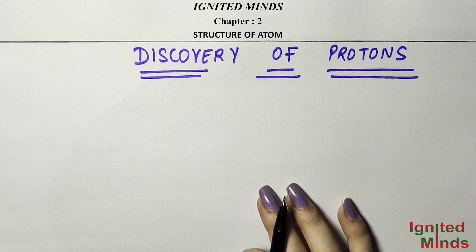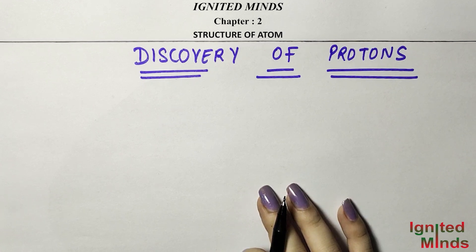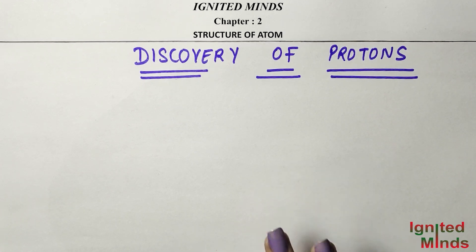We have already discussed the discovery of electrons — how it happened, what was the charge-to-mass ratio, and how the experiment was conducted.